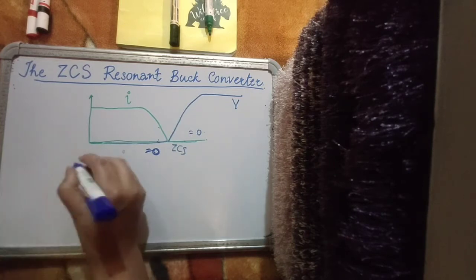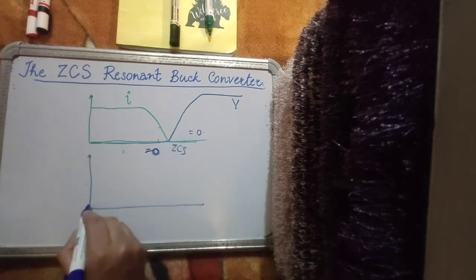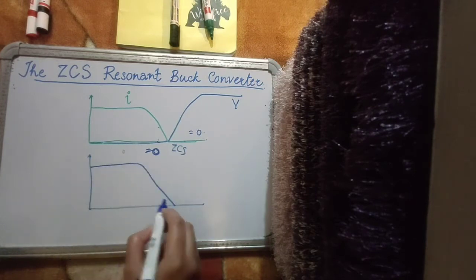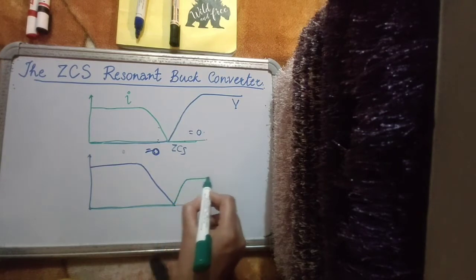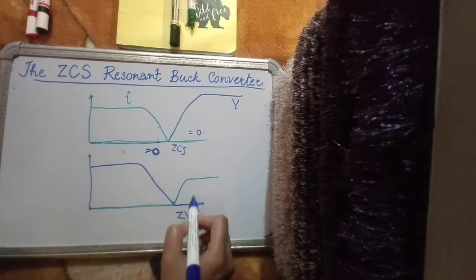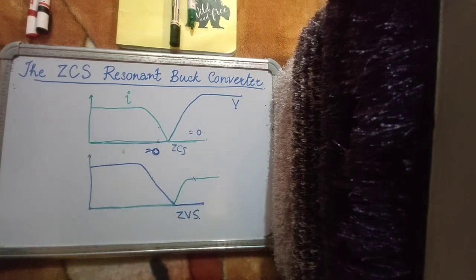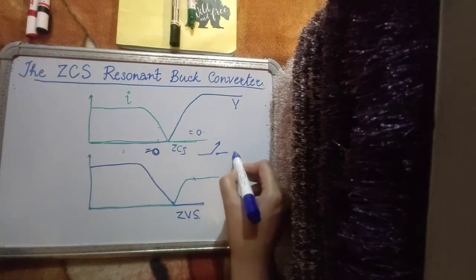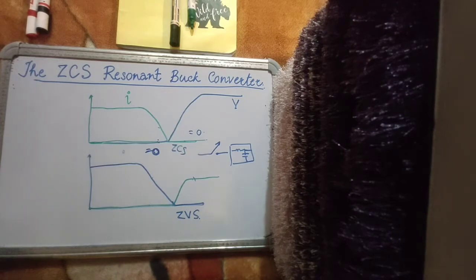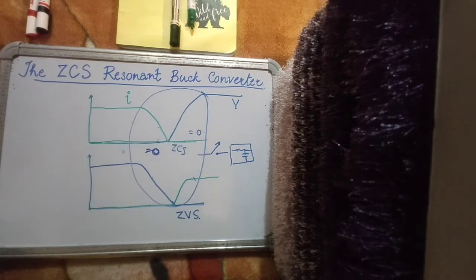Similarly you can also have zero voltage switching. For instance, during turn on the voltage across the device first falls and then the current through the device rises. So voltage first becomes zero and then the current switches — that is zero voltage switching. Again power loss is zero because the product of voltage and current in each interval is zero. Using a switch coupled with a resonating LC tank circuit we achieve these characteristics and drastically reduce switching power losses, almost making them equal to zero.